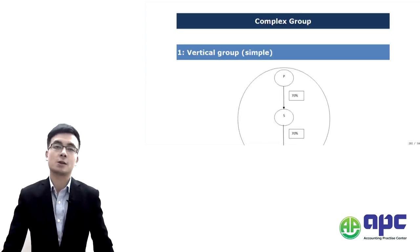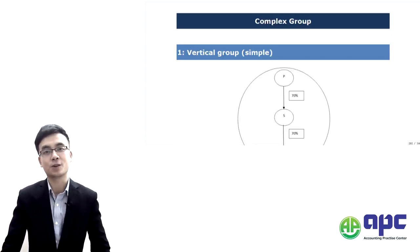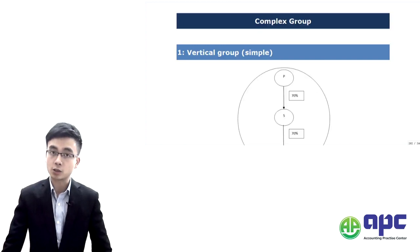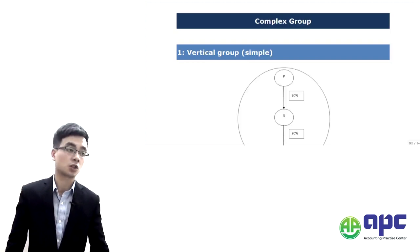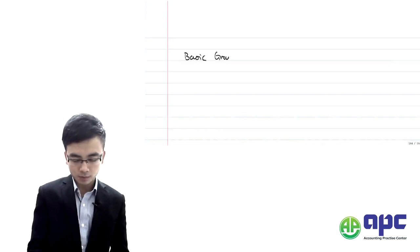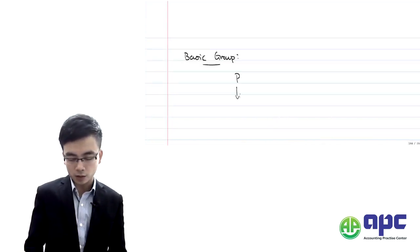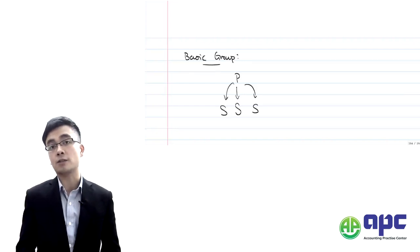Welcome back. We've looked at the basic group consultation in the previous sections, and now let's come to the complex group. The name is complex, but in fact it is not that complex at all, because all you need to do is two accounting adjustments on top of the basic group consultation. Within the basic group, all you've got is the parent and under which there will be a subsidiary, or perhaps multiple subsidiaries.